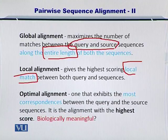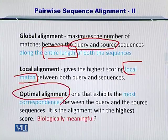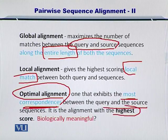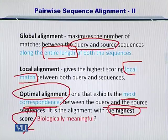There is a third category of sequence alignment as well, which is not a formal category, and that is the optimal alignment. This kind of alignment exhibits the most correspondence between the query and the source — it is the alignment with the highest score. We will discuss how to score these alignments later and come back to optimal alignment at that point.